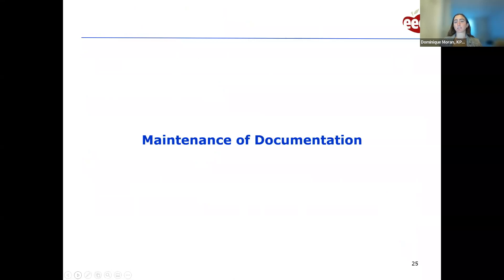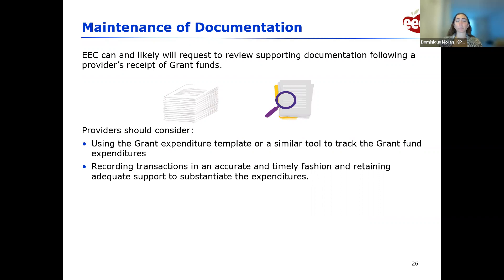Now we'll talk about maintenance of documentation as it relates to expenditures made with grant funds. EEC can request to review supporting documentation for grant expenditures at any time, so your documentation should always be ready for outside review. You should consider keeping a tracker of all expenditures made with Child Care Stabilization Grant funds. We have a tracker we'll go through later that will be shared in mid or late April. If you've already been following these processes, great — if not, begin doing so from here on out.